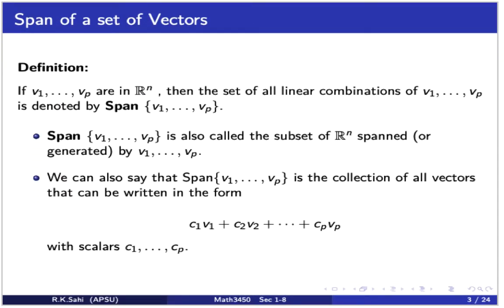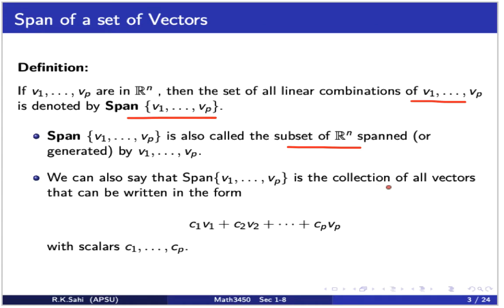Let's begin with a recap of the span of a set of vectors. If we have v1 to vp, some vectors in n-dimensional space, then the set of all linear combinations of v1 to vp is called the span of v1 to vp. The span is a collection of all vectors which can be written in the form c1*v1 + c2*v2 + ... + cp*vp, where the ci's are all scalars.